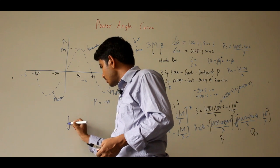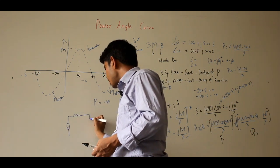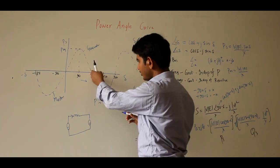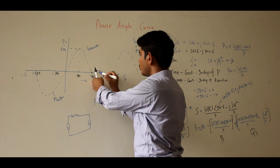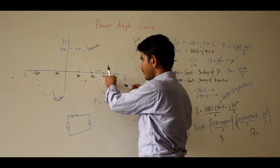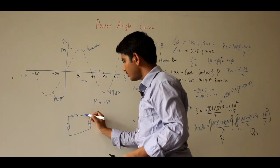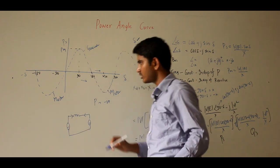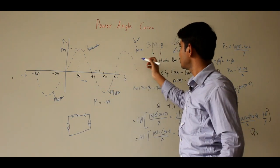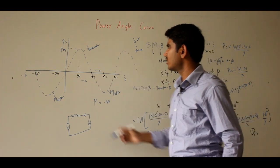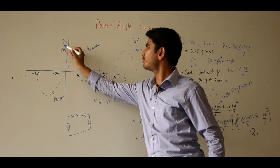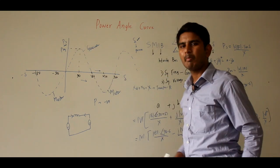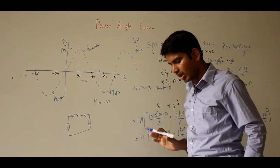Earlier, in the SMIB circuit, power was flowing from the synchronous machine to the infinite bus. But when delta goes beyond 180° — in the range 180° to 360° — power flows in the opposite direction, from the infinite bus back to the synchronous machine. This is how the steady state real power varies with respect to the power angle delta. This is all about the power angle curve. I hope you understood well.